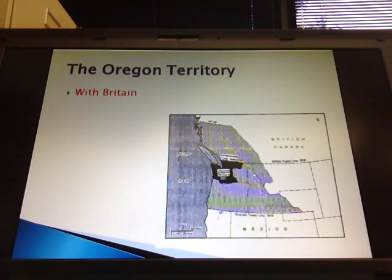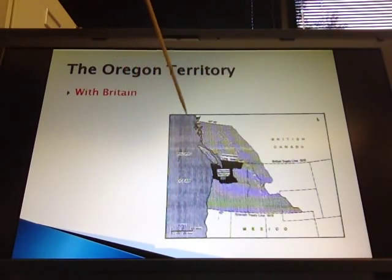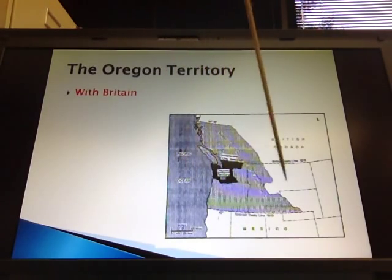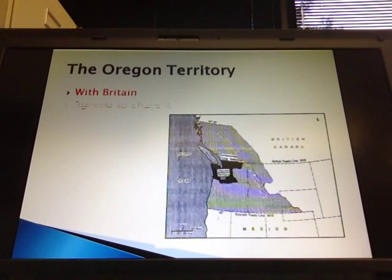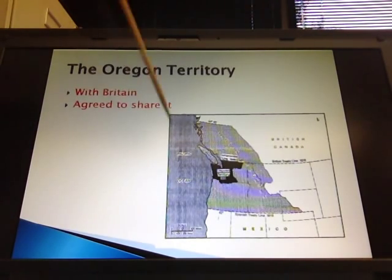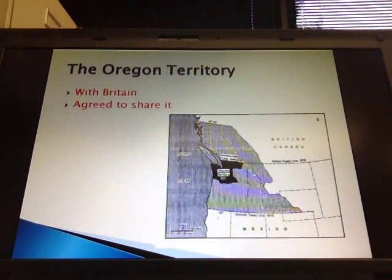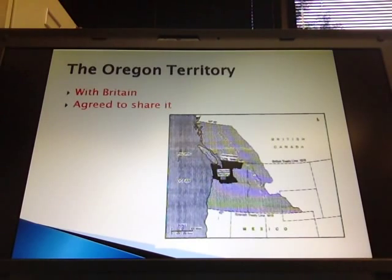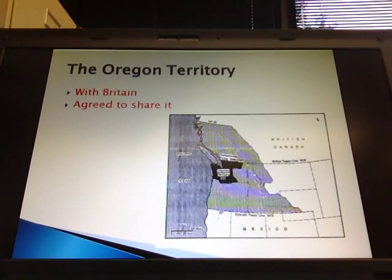We also had the Oregon Territory Treaty, where land in modern-day Washington State and Oregon had been shared with Britain. By this time period we box the Spanish out so just us and the British control it. The fact that Britain is willing to share something with us shows they consider us equals — we're one of the big kids on the playground, because now Britain is sharing their sandwich with us.